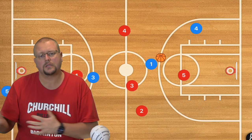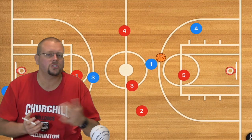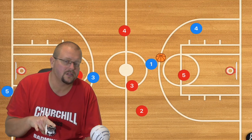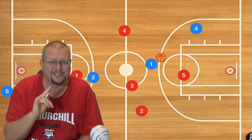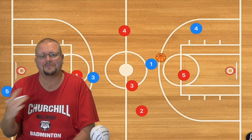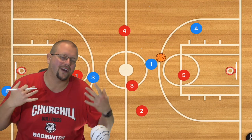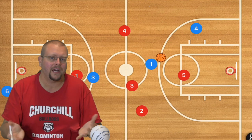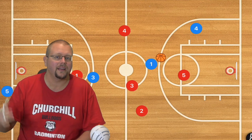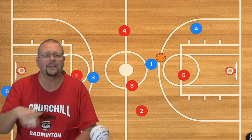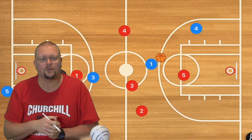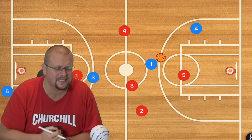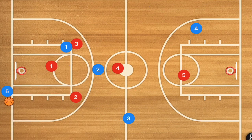That was a genius play — there aren't many press break plays that will start with fewer than two players. It's usually two or more players trying to get the inbound pass option, but in this case there was only one, and the player who was supposed to get it was at half court. Not many press breaks are set up like that.